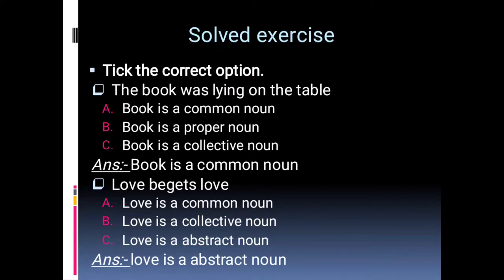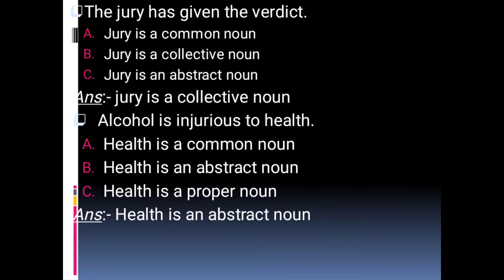Now let's look at the exercise of noun — tick the correct option. 'The book was lying on the table' — is book a common noun, a proper noun, or a collective noun? The right answer is: book is a common noun. 'Love begets love' — is love a common noun, a collective noun, or an abstract noun? Love is an abstract noun. 'The jury has given the verdict' — is jury a common noun, a collective noun, or an abstract noun? Jury is a collective noun.